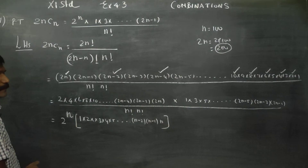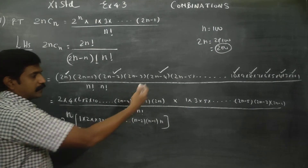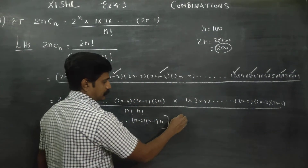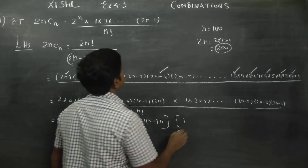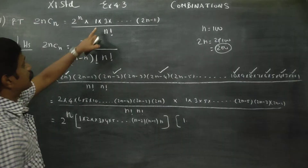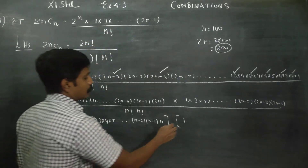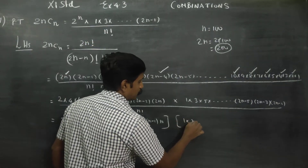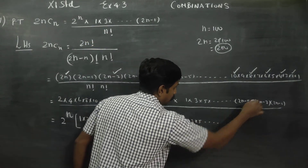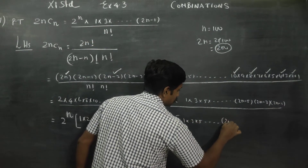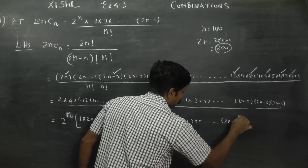That gives us 2 power n. The odd number terms: 1, 3, 5, dot dot dot, with last term 2n minus 1.